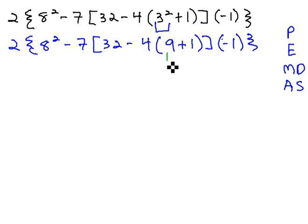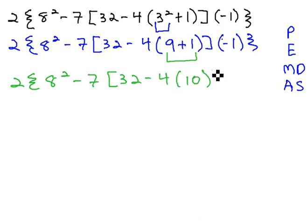We still are not done with that innermost parentheses, so let's do that next, giving us 2 times 8 squared minus 7 times 32 minus 4 times, 9 plus 1 is 10, times negative 1, and close the squiggly parentheses.